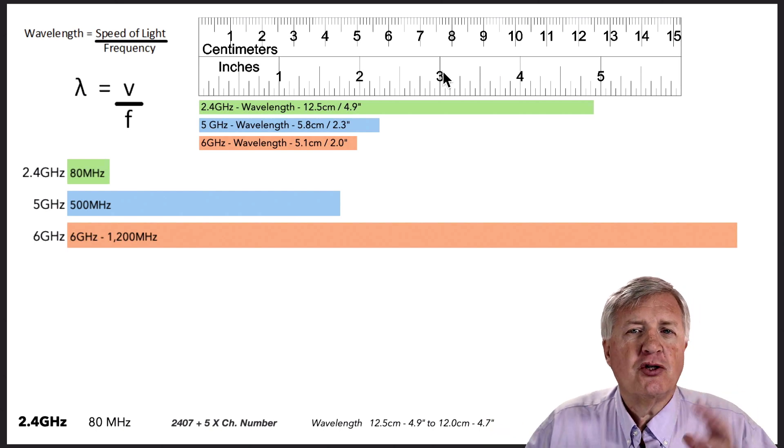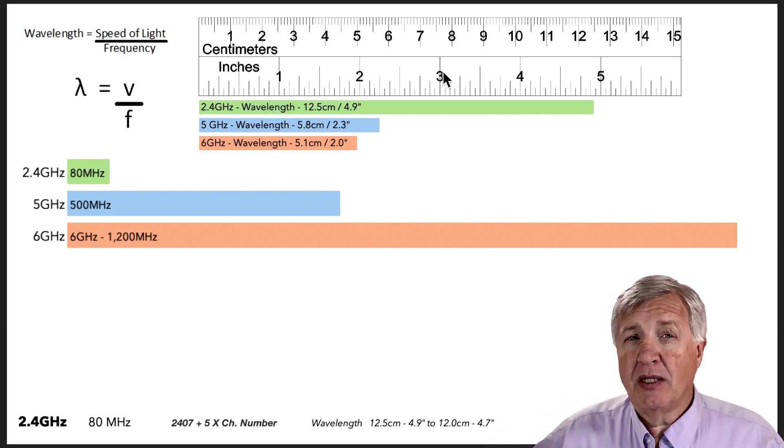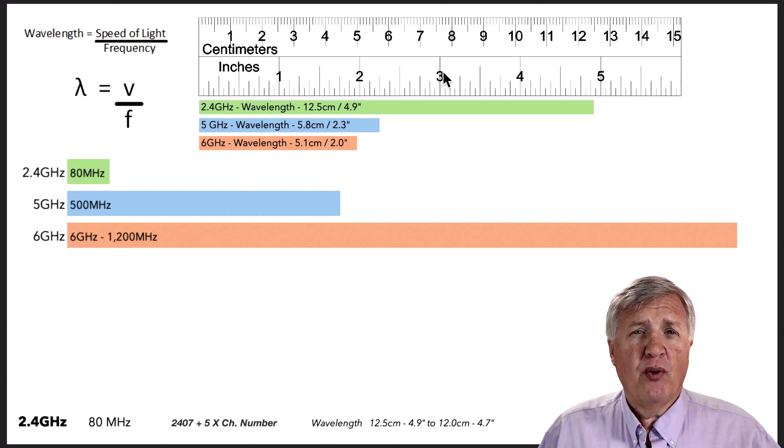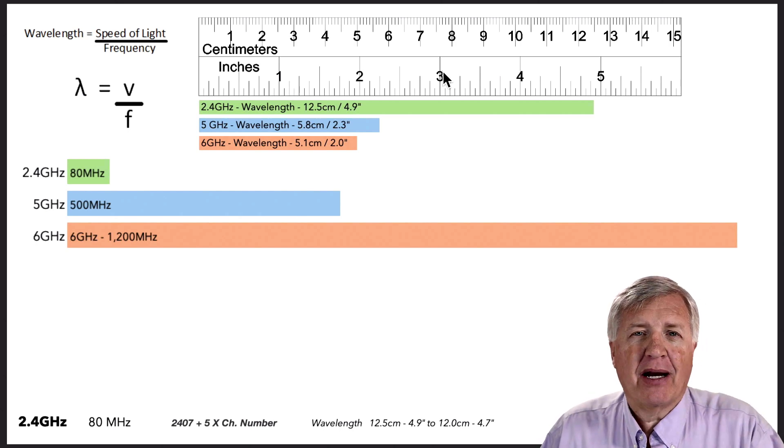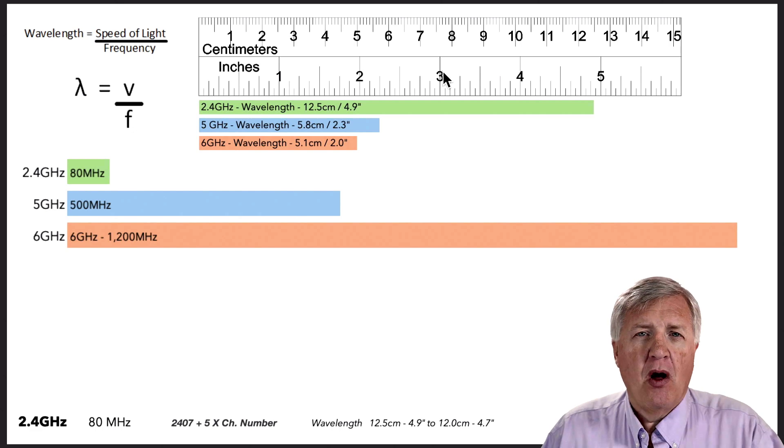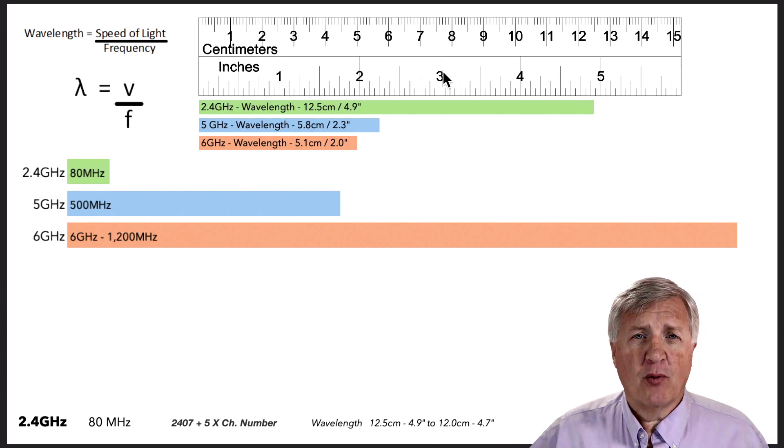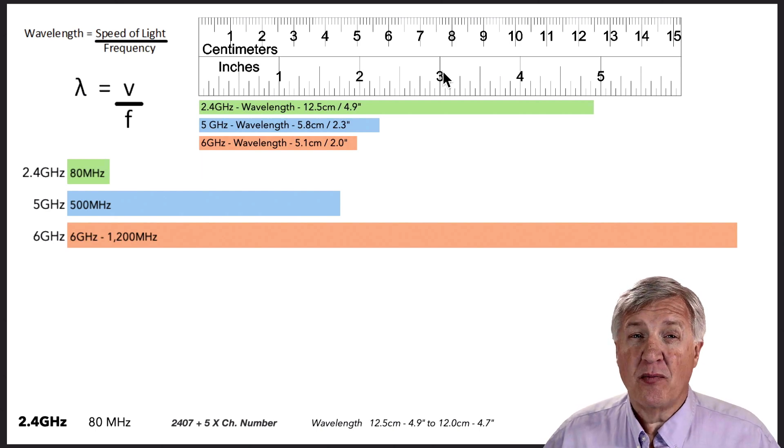If we're going to compare 2.4 to 5 gigahertz and what's available in 6 gigahertz, you can see 2.4 gigahertz only has about 80 megahertz of bandwidth. Very small. And we only have like three channels we can choose from. So as we went from 2.4 to 5, we got a lot more space. And then moving to 6 is even more.